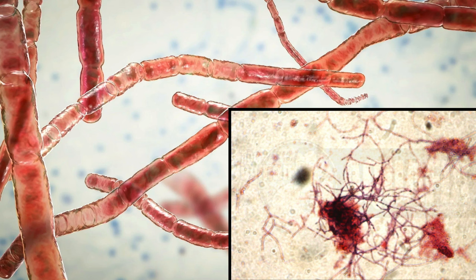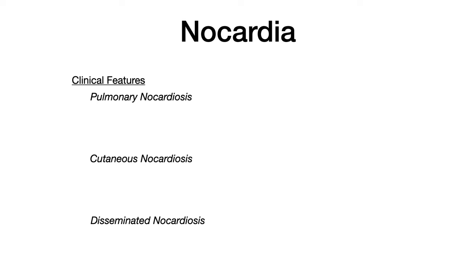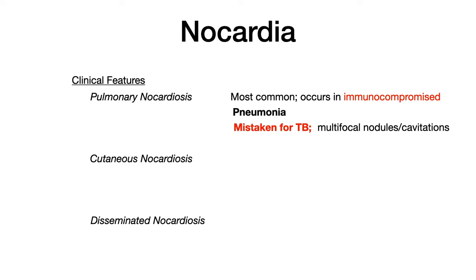There's not a lot of virulence to discuss, so let's get right into clinical features. Nocardia can cause three different presentations: pulmonary, cutaneous, and disseminated. Pulmonary nocardiosis is the most common presentation. The infection is in the lungs and occurs chiefly in immunocompromised individuals. It resembles a pneumonia, which makes differential diagnosis difficult. It is often mistaken for tuberculosis because it can form multifocal nodules or cavitations in the lungs.